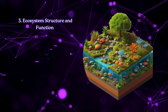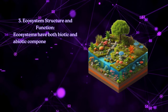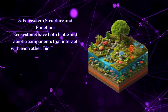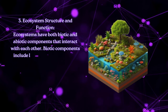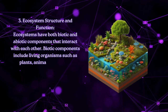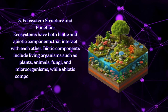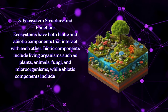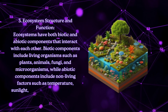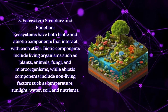Ecosystem structure and function: Ecosystems have both biotic and abiotic components that interact with each other. Biotic components include living organisms such as plants, animals, fungi, and microorganisms, while abiotic components include non-living factors such as temperature, sunlight, water, soil, and nutrients.